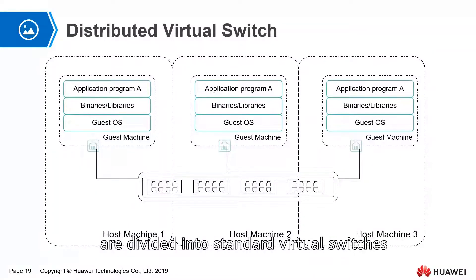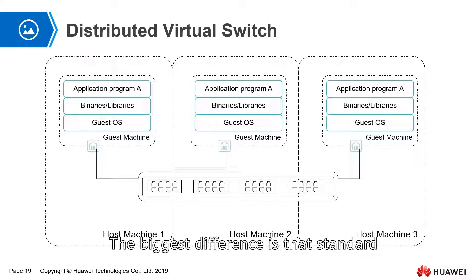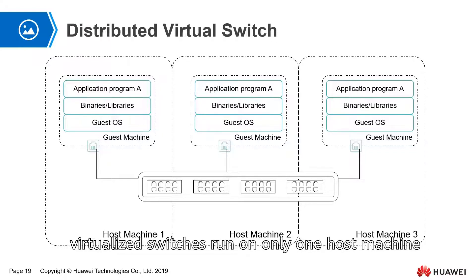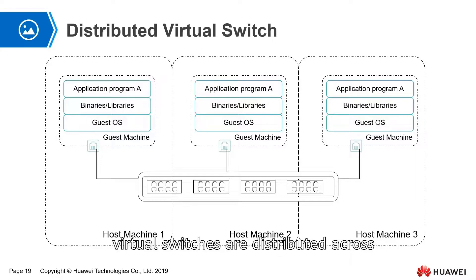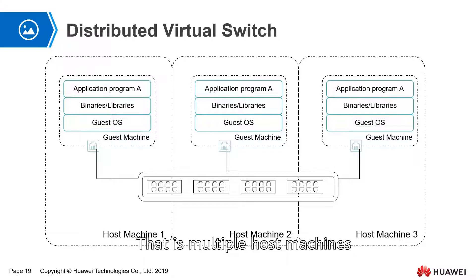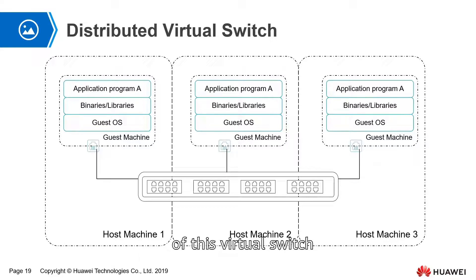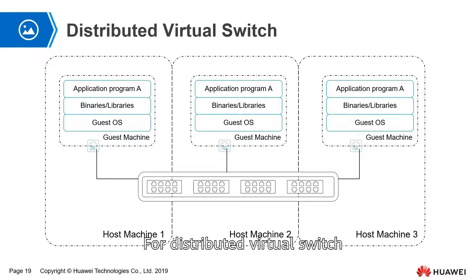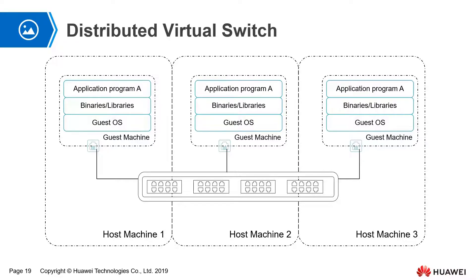Virtual switches are divided into standard virtual switches and distributed virtual switches. The biggest difference is that standard virtual switches run on only one host machine, while distributed virtual switches are distributed across multiple host machines. The benefit of a distributed virtual switch is that multiple host machines share one virtual switch — you only need to modify the configuration of this virtual switch and the configuration of all host machines will be updated. For virtual machine hot migration, a distributed virtual switch is a necessary condition. Huawei only supports distributed switches in its virtualization solution.